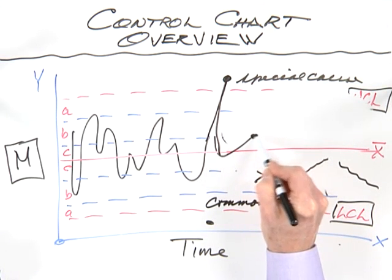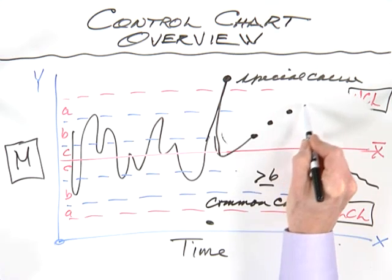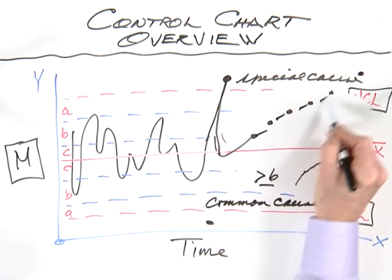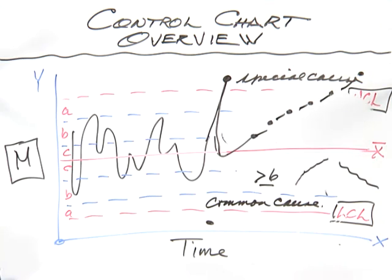A trend is when you have six or more data points constantly going up or constantly going down. We would see data one, two, three, four, five, six. That would be an upward trend and similarly you could have a downward trend.